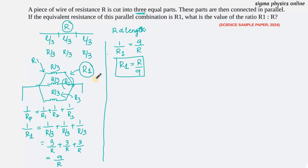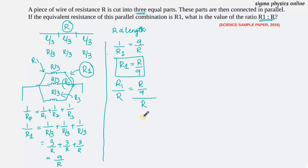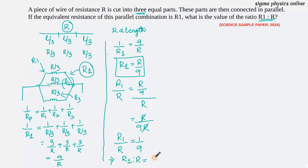So R/9 is the value of the equivalent resistance of the three wires, each of resistance R/3, connected in parallel. Now we find the ratio: R1/R = (R/9) / R = 1/9. So R R cancels, giving R1 to R equal to 1 to 9. This is the answer to our question.